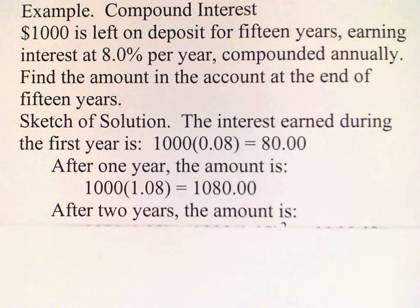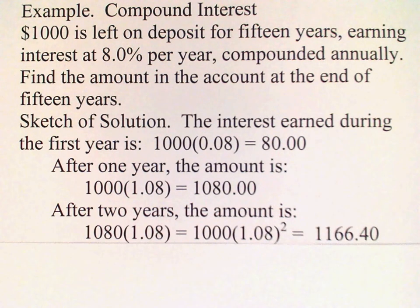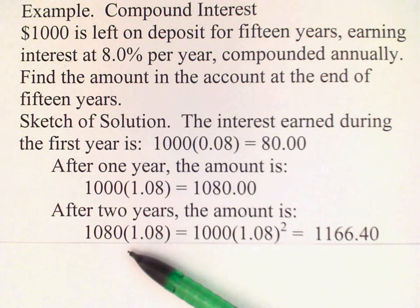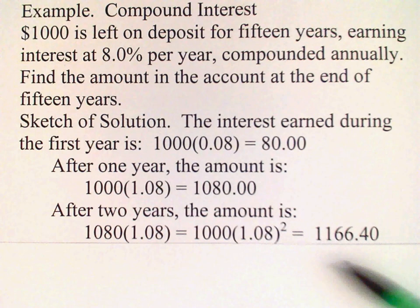After two years, from the same process, we take the balance at the end of one year, multiply by 1.08, and we come up with $1166.40.